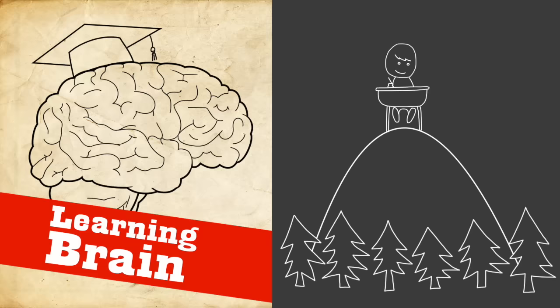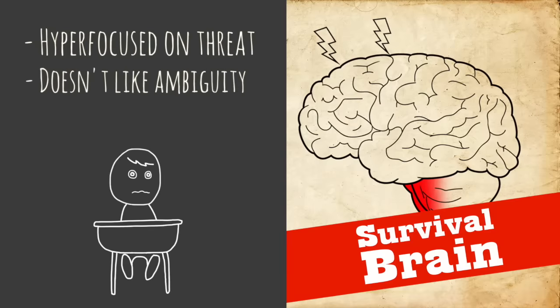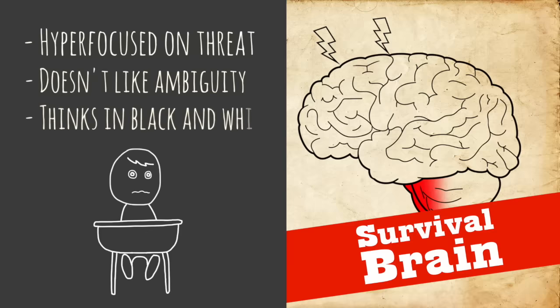Now survival brain on the other hand is completely different. It's hyper focused on threat, it doesn't like ambiguity, it wants clear hard facts, it thinks in black and white terms, it doesn't want anything to be gray at all.